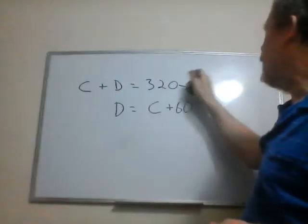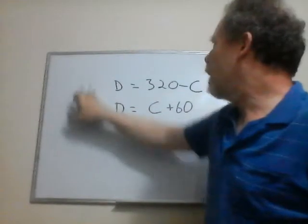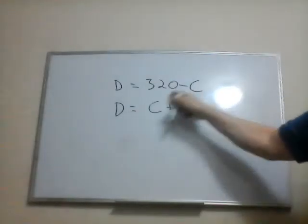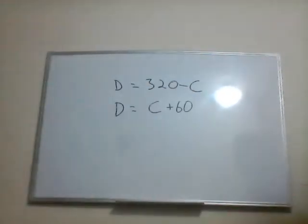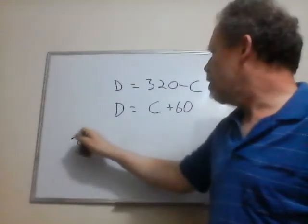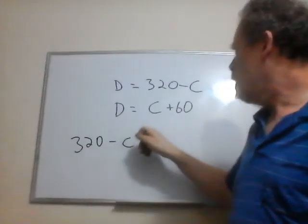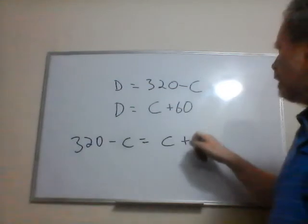I have the Ds lined up. I can take the C over here. Then those are both, if this is equal to D and that's equal to D, then I can just take this 320 minus C equals C plus 60.